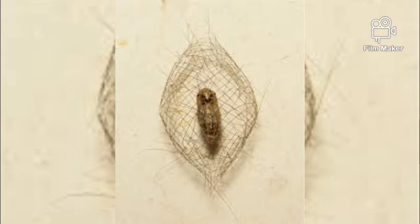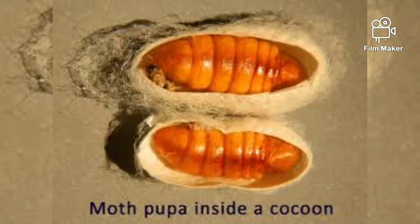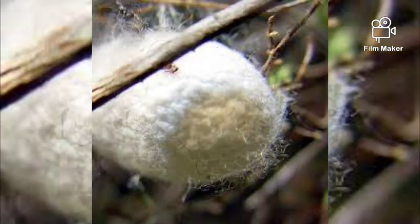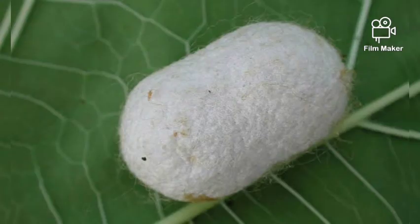Inside the cocoon, the silkworm transforms itself into a chrysalis, and this stage is called pupa. The silkworm continues to develop inside the cocoon and changes into an adult. Silk fibers are obtained from the cocoon of silkworms.